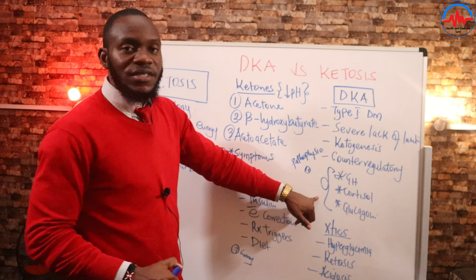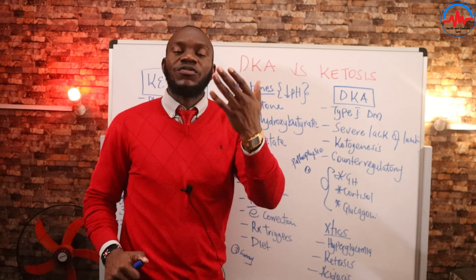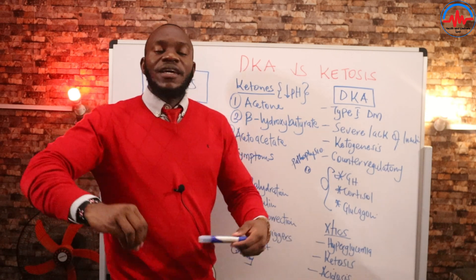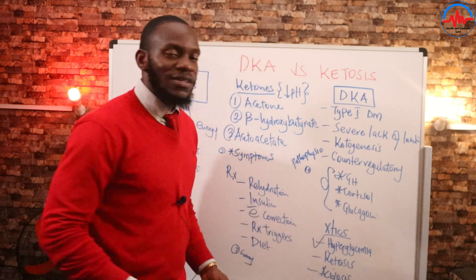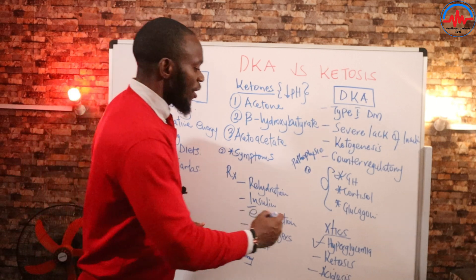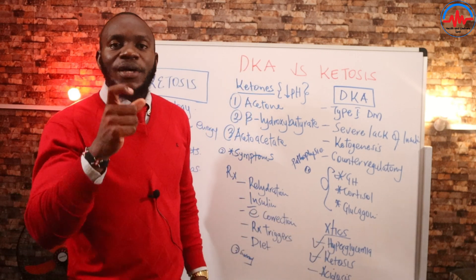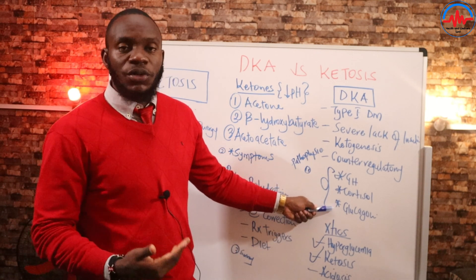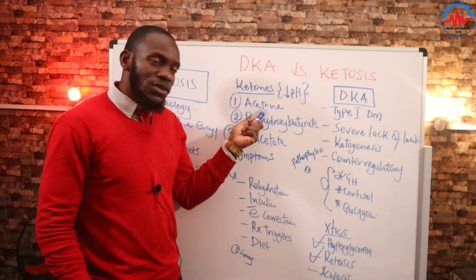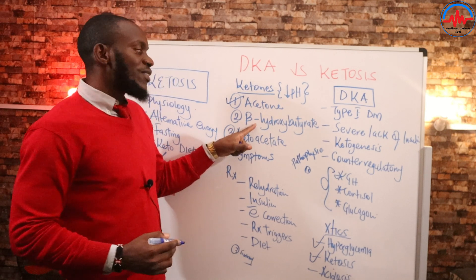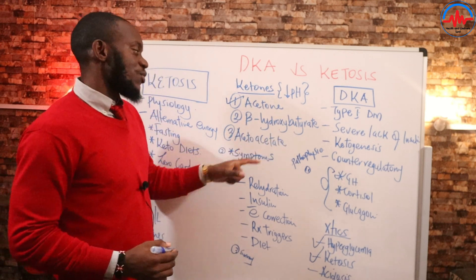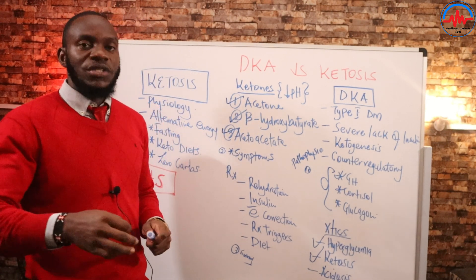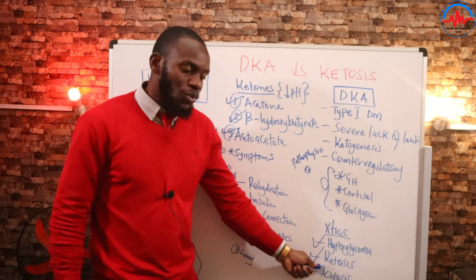So what happens after you get these counter-regulatory hormones? There are three characteristics of DKA. Number one: hyperglycemia — because we are eating carbohydrates and don't have insulin, blood glucose levels start to rise. Number two: ketosis — we are breaking down fat in the fat cells through counter-regulatory hormones to give you energy and ketone bodies. Those three ketone bodies are acetone, acetoacetate, and beta-hydroxybutyrate — these are the three ketone bodies produced anytime we break down fat through ketosis.